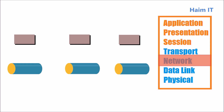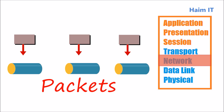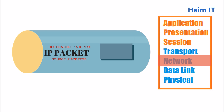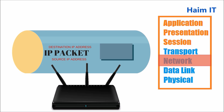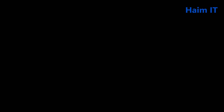These segments are handed over to the network layer, where they are placed into the packet containers. These containers also contain the destination and source IP addresses that will be used for routing the packets from one subnet to another.